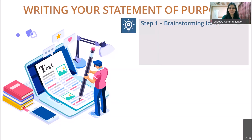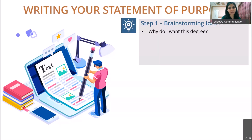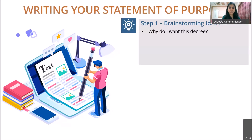There are four steps to writing an SOP. The first is brainstorming ideas. When I decided to write the SOP myself, I just sat down and started writing — don't do that, it's a mistake. First, go into flashback mode and think about all your life experiences. Then answer these questions: Why do I want this degree? What is the real reason, not just side benefits like job opportunities or international exposure?